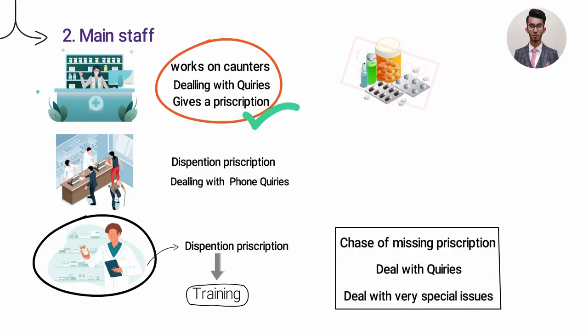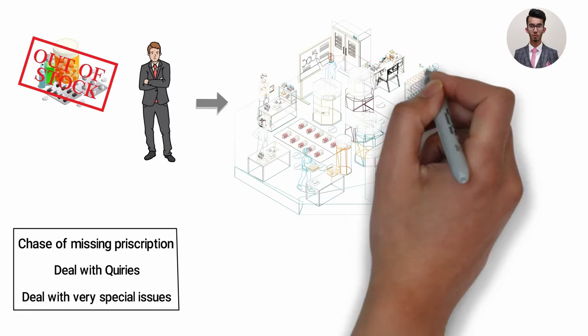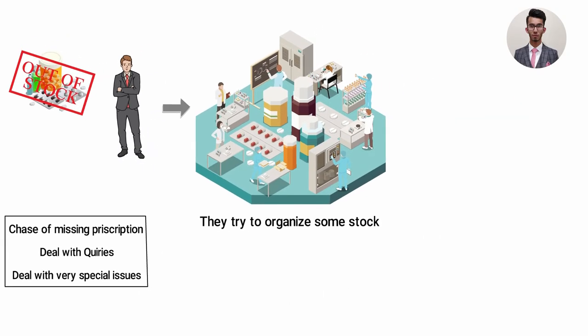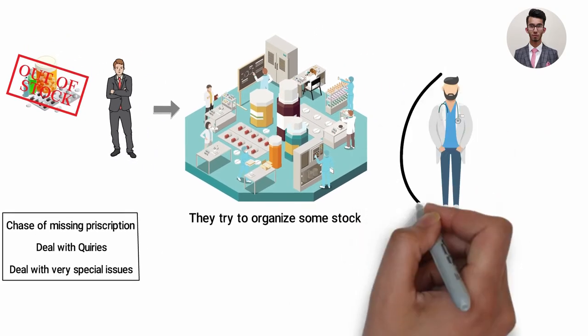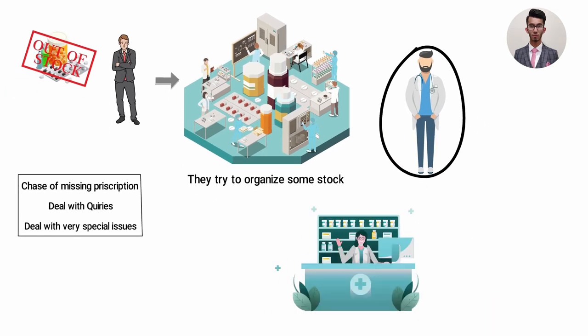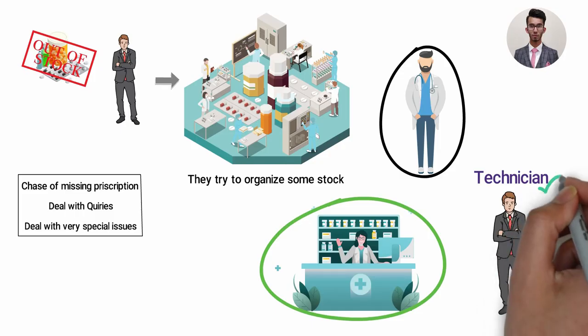For example, when drugs go out of stock, it's usually the technicians that speak to suppliers and manufacturers to try and organize some stock, and if nothing is possible they'll normally arrange an alternative with the doctor. Depending on the pharmacy, in some pharmacies you can also find a dispenser doing these, but usually it is the technicians.